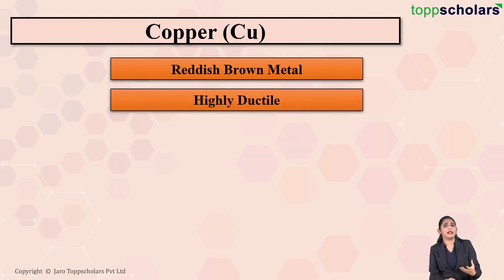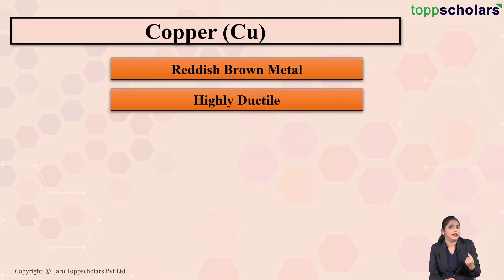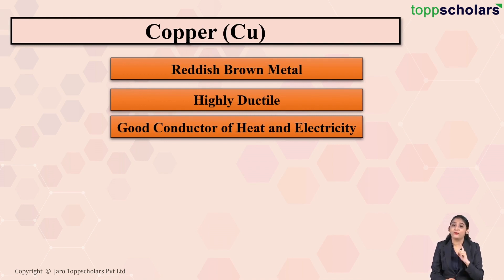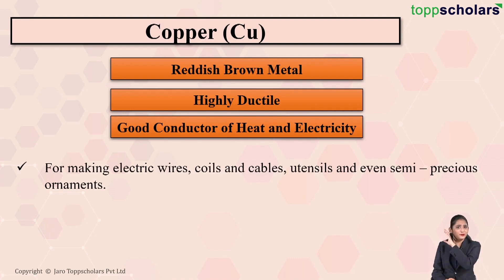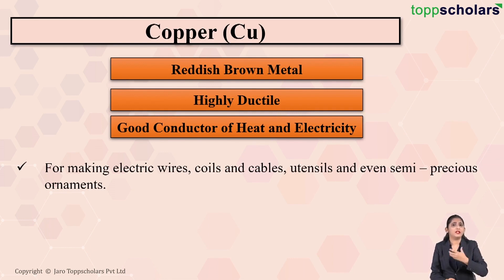Copper is highly ductile — you can see copper wires in electrical cables, which means copper can be easily drawn into wires. Copper is a good conductor of both heat and electricity. Because of these properties, copper is used for making electric wires, coils, and cables, as well as copper utensils.